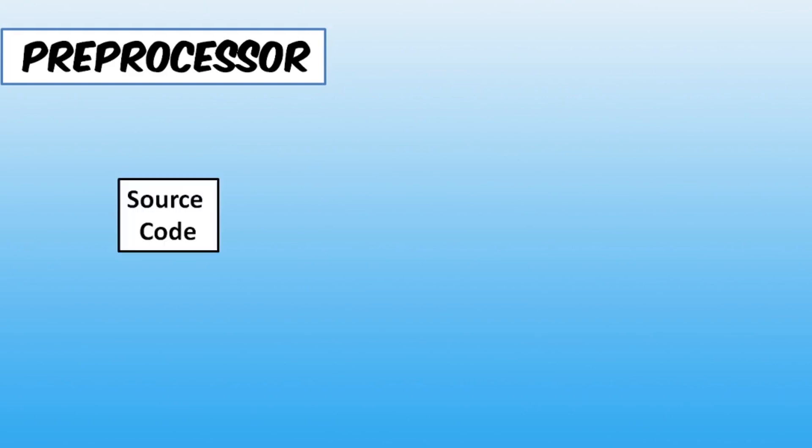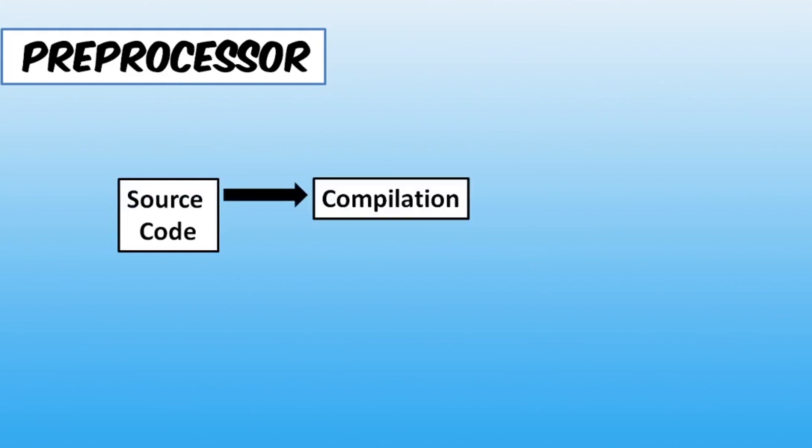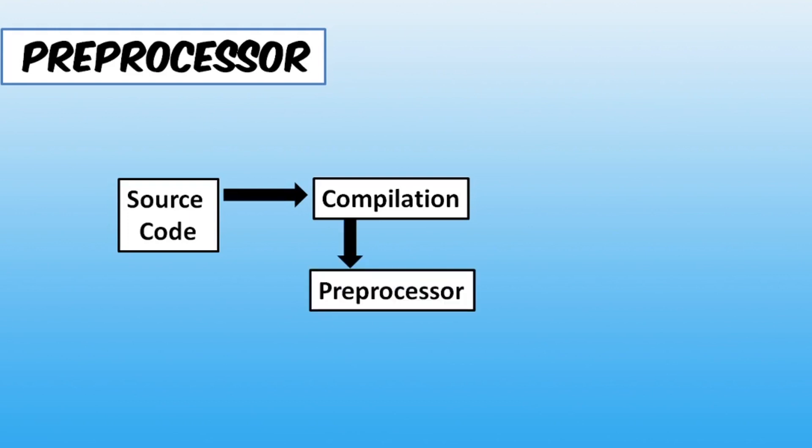Before talking about preprocessor directives, let's get cleared out what a preprocessor is. Preprocessors are a special type of processor that process the program before the actual processing. So at first we write the source code, then comes the execution process, and at the beginning of the execution process there comes compilation. But before the actual compilation starts, there comes the preprocessor, which will convert the source code into a complete C program.